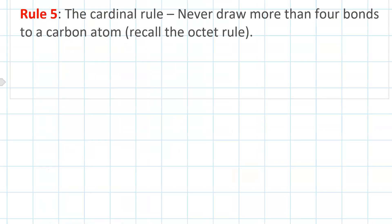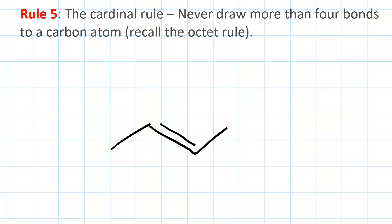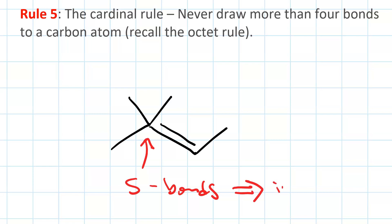Rule number 5 is to never have a carbon with more than 4 bonds. If you do that, you're breaking the octet rule. For instance, if you ever draw something that has 5 bonds on a carbon, you know it is incorrect. So if you draw something that has 5 bonds to a carbon, you've got to start over.